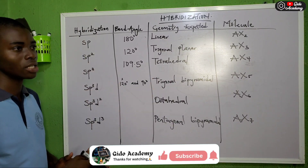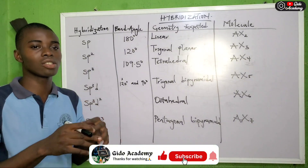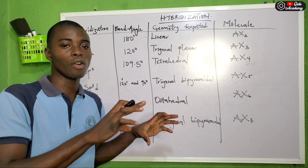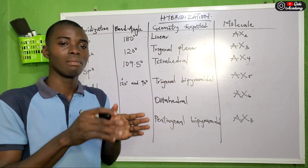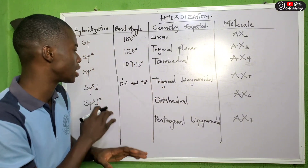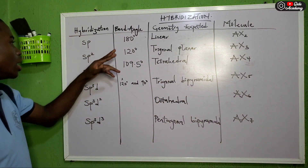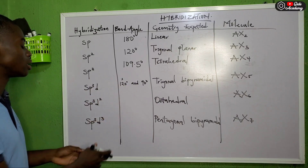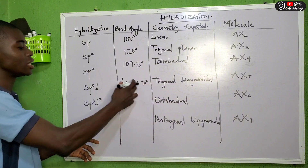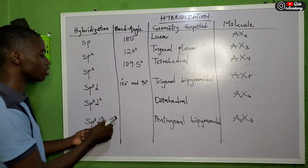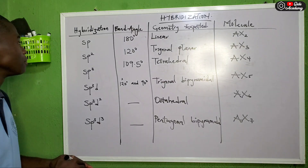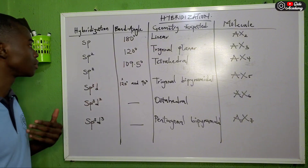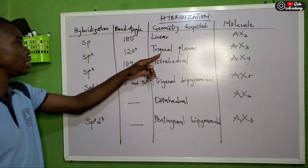If a question asks: one electron of the s orbital blends with three electrons of the p orbital and two electrons of the d orbital — the hybrid formed is sp3d2. The bond angles are: sp is 180°, sp2 is 120°, sp3 is 109.5°. For sp3d, three bonds are at 120° and two at 90°.